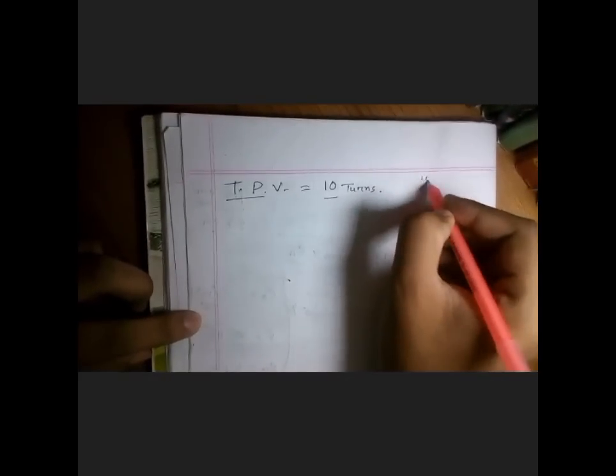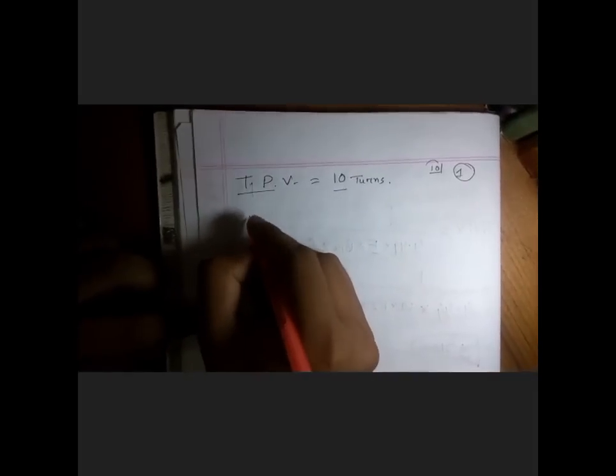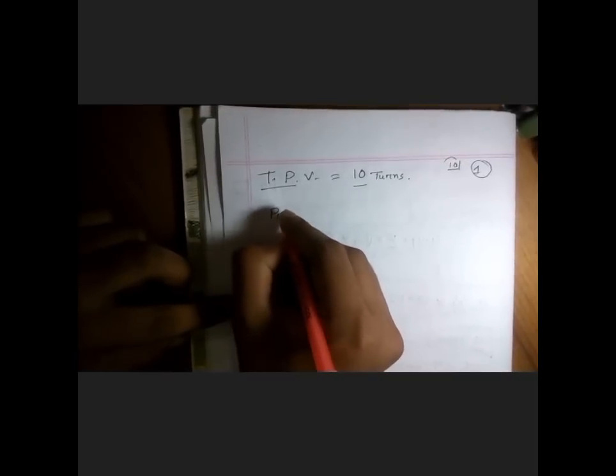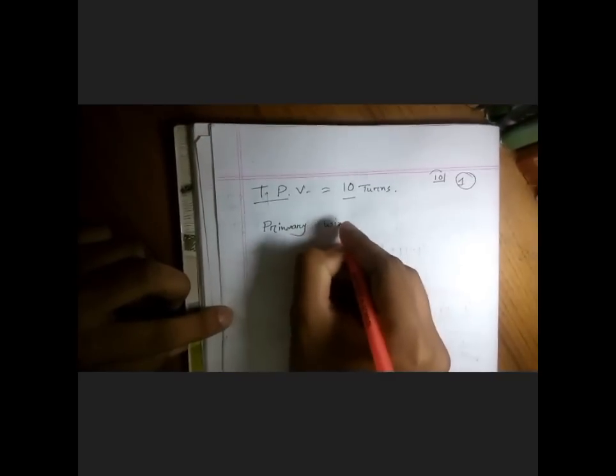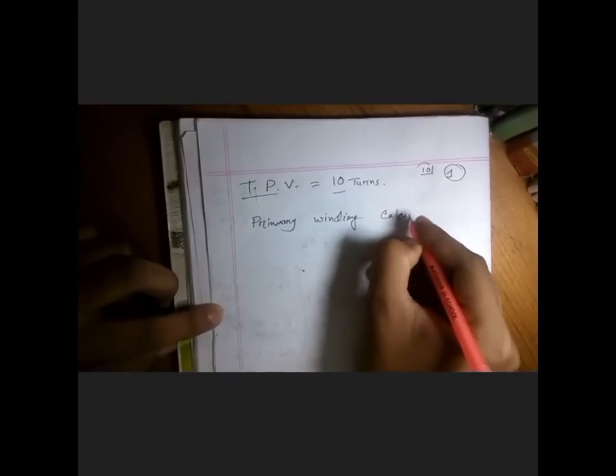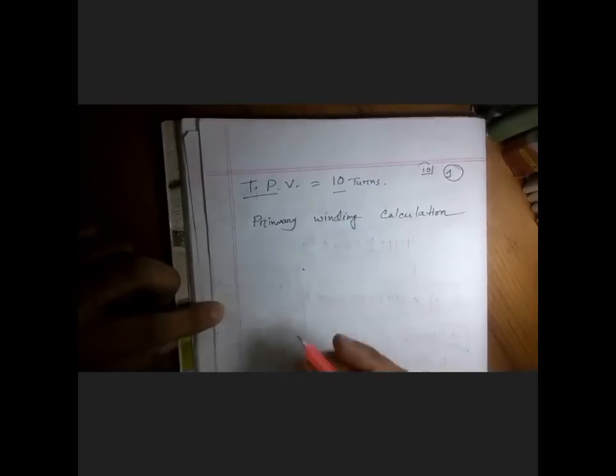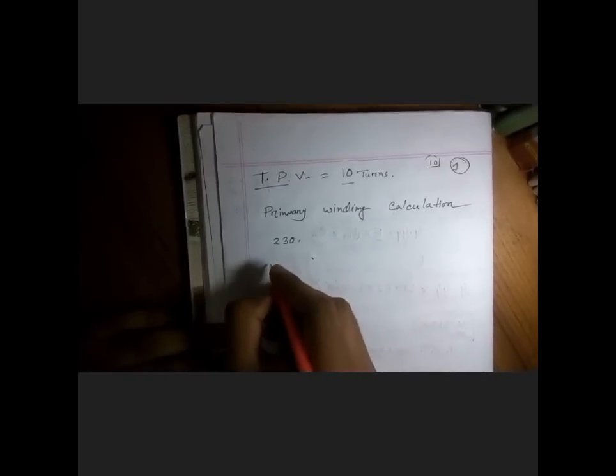Then now we're going to calculate the primary winding. Let's start primary winding calculation. Okay, suppose our country supplies us with 230 volt, so our primary volt is 230 volts.